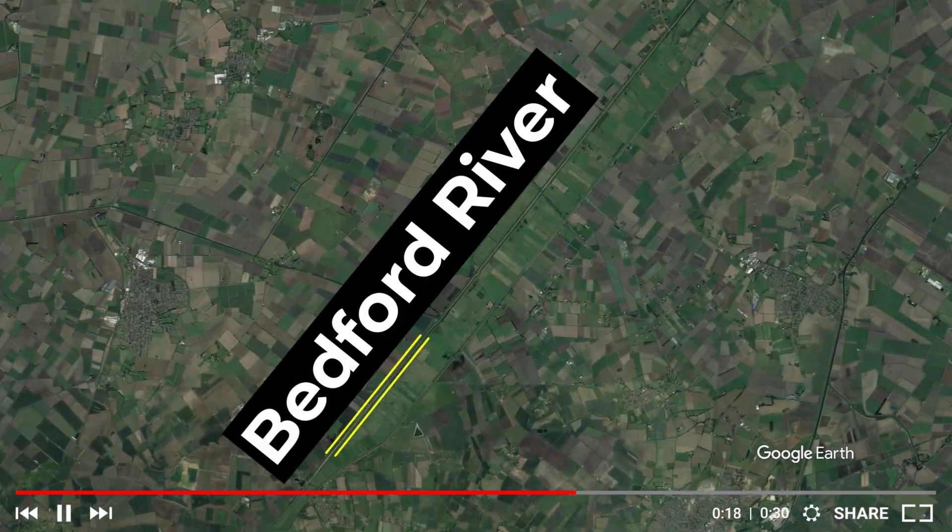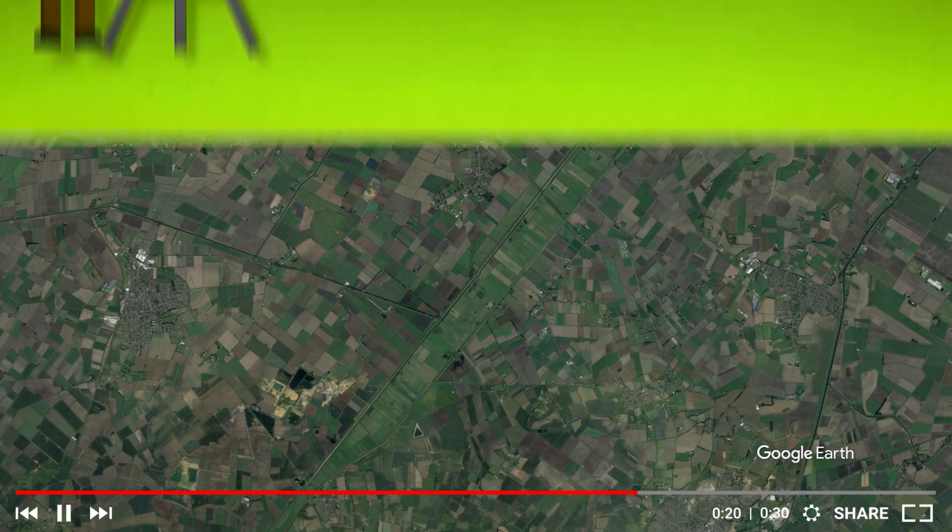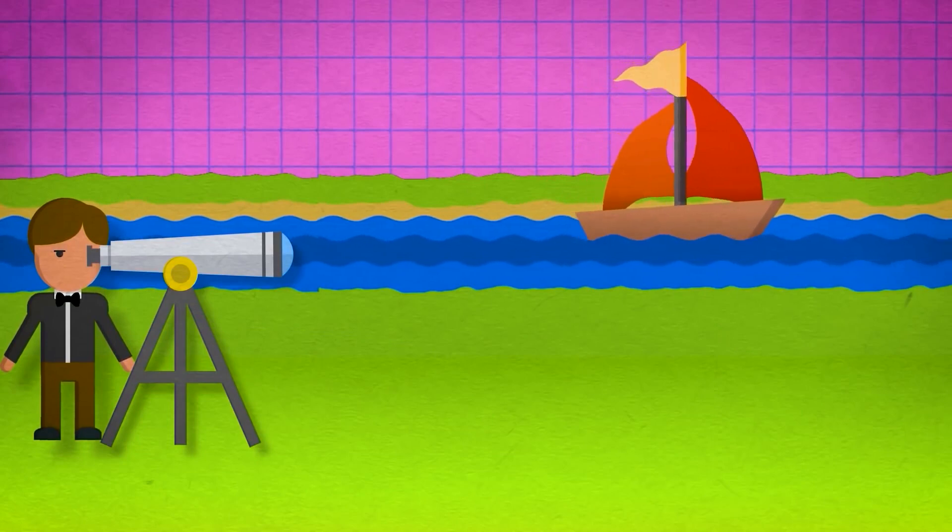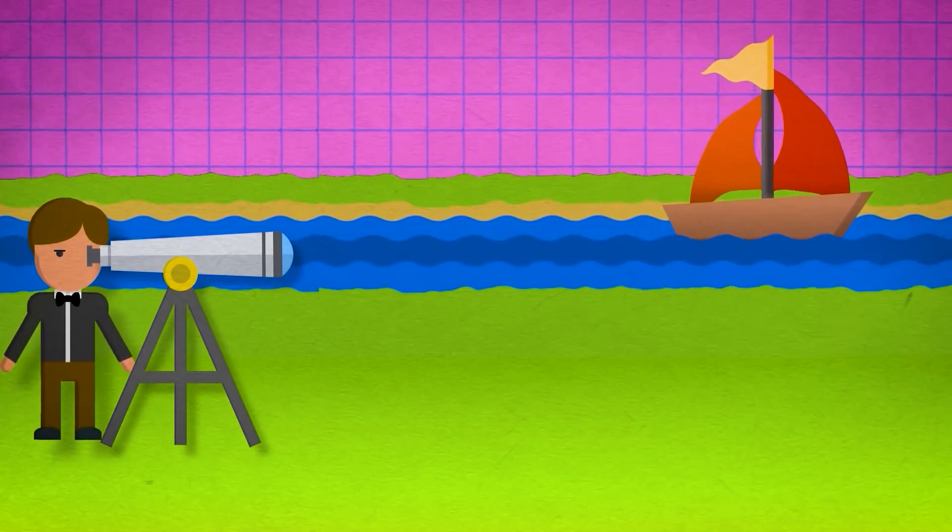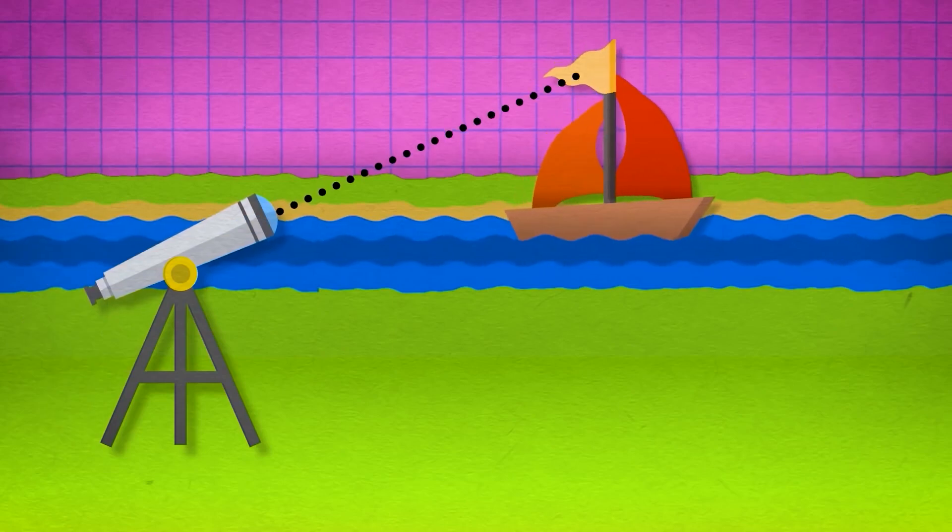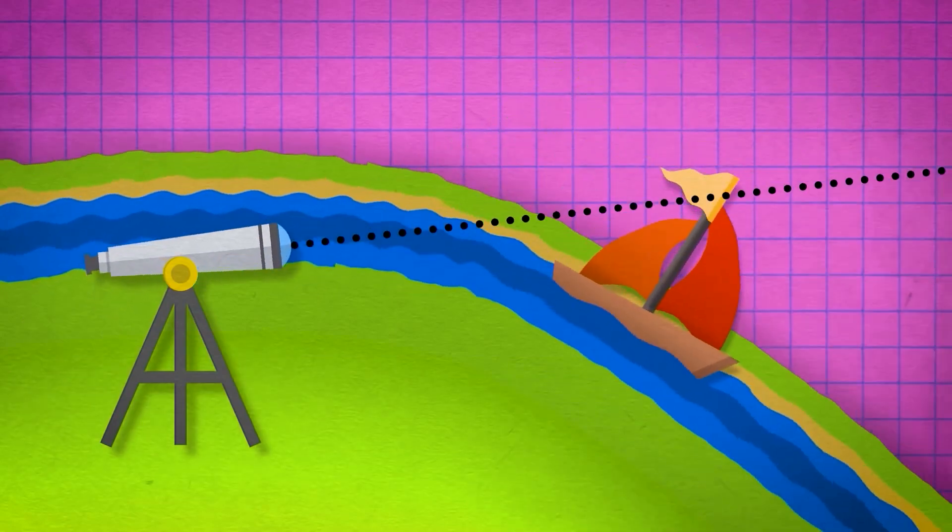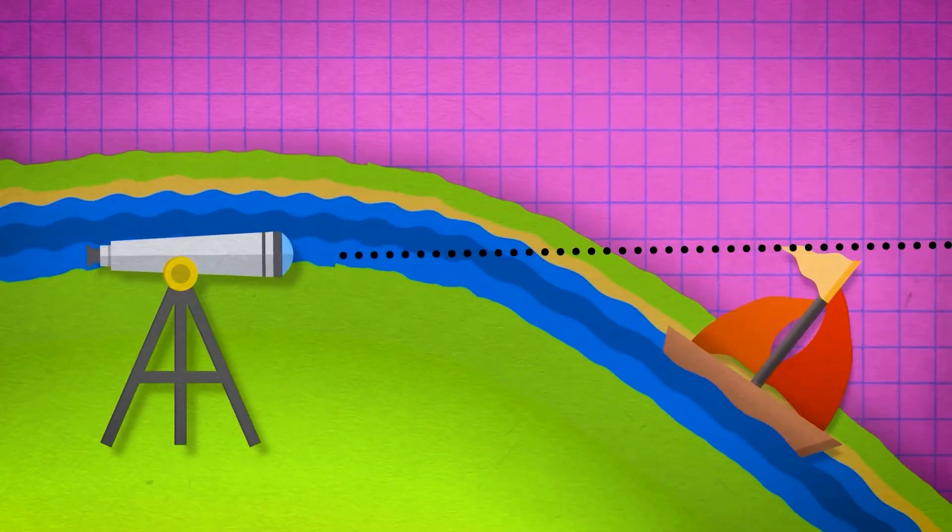In the video, he talked about the Bedford level experiment. To summarize, a guy got in a river and held a telescope close to the water. He then had his friend sail down the river. After 6 miles, based on the curvature of the Earth, he shouldn't have been able to see the boat, but yet he could.